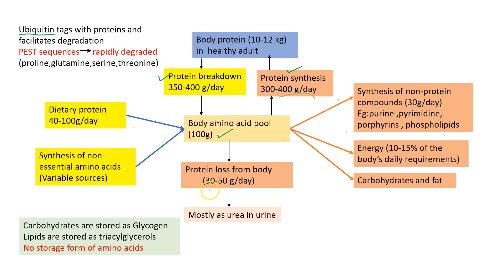Because protein loss from the body is approximately 30 to 50 grams per day as urea in the urine, we require dietary protein. The recommended daily allowance is usually 1 gram per kg per day, but a normal human usually consumes more than that. The normal dietary protein intake is usually 40 to 100 grams per day, which then enters the body amino acid pool.